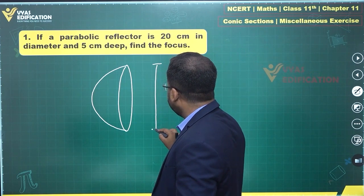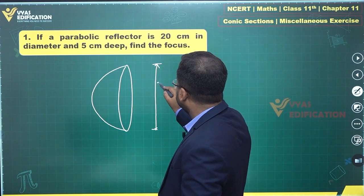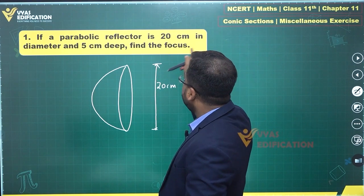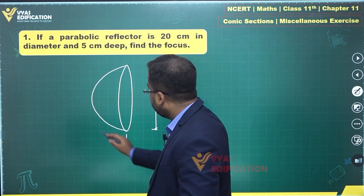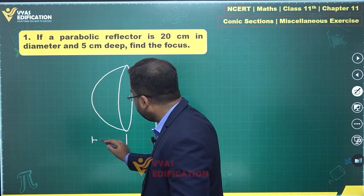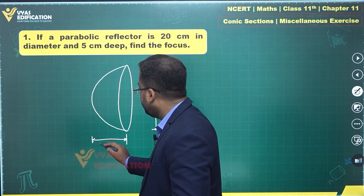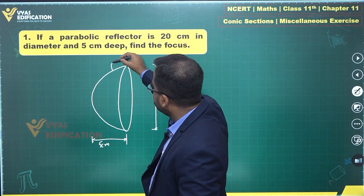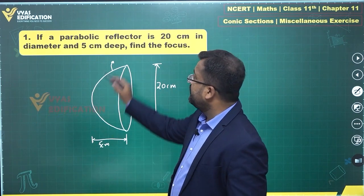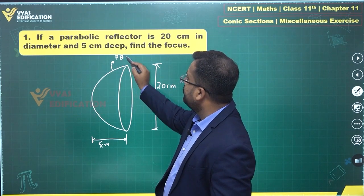This is the diameter that's mentioned as 20 centimeter and depth is 5 centimeter. The depth over here is 5 centimeter, that's what the person has mentioned and which shape is parabola? This is the parabolic shape, that's what we are looking at.